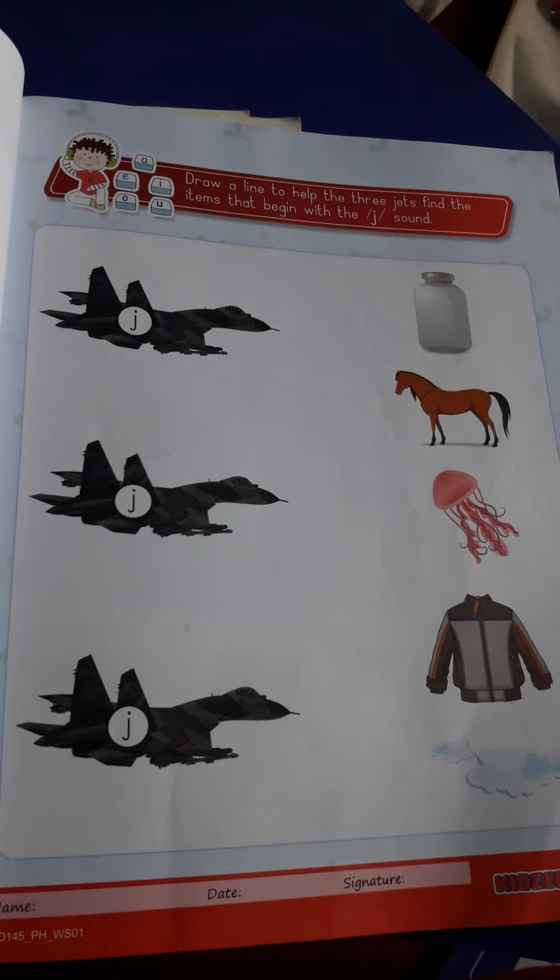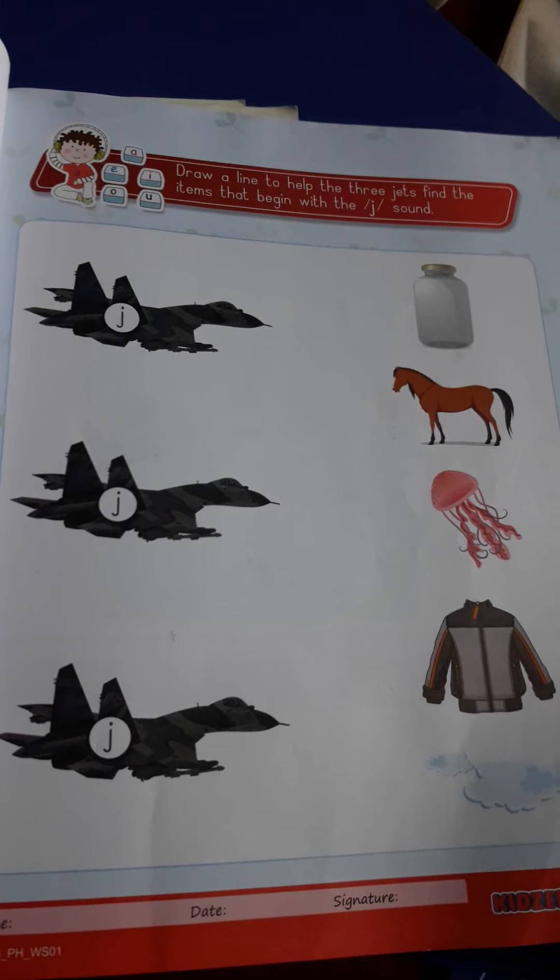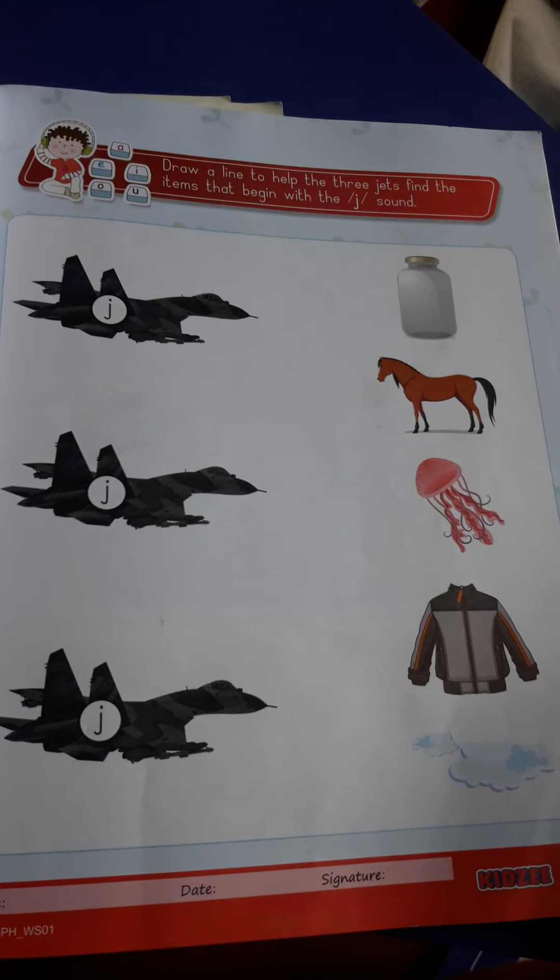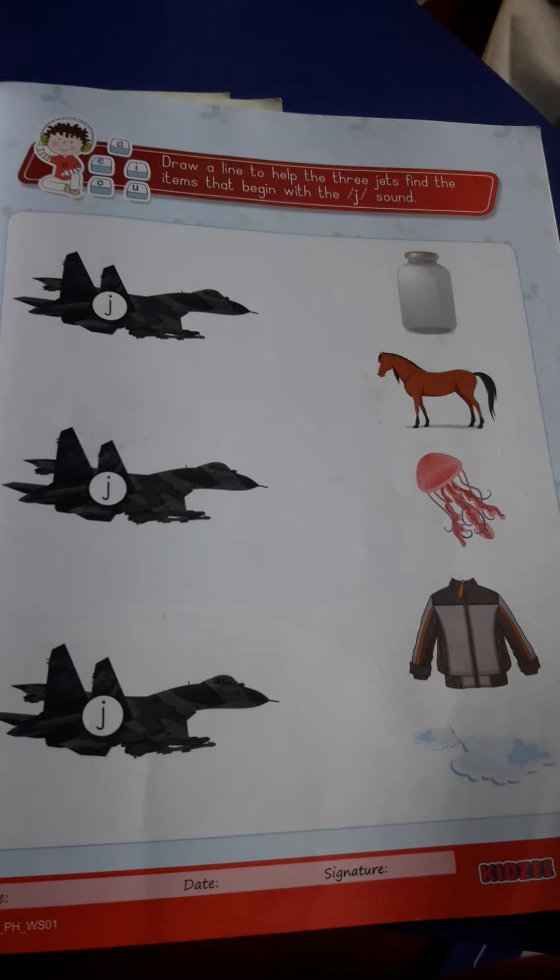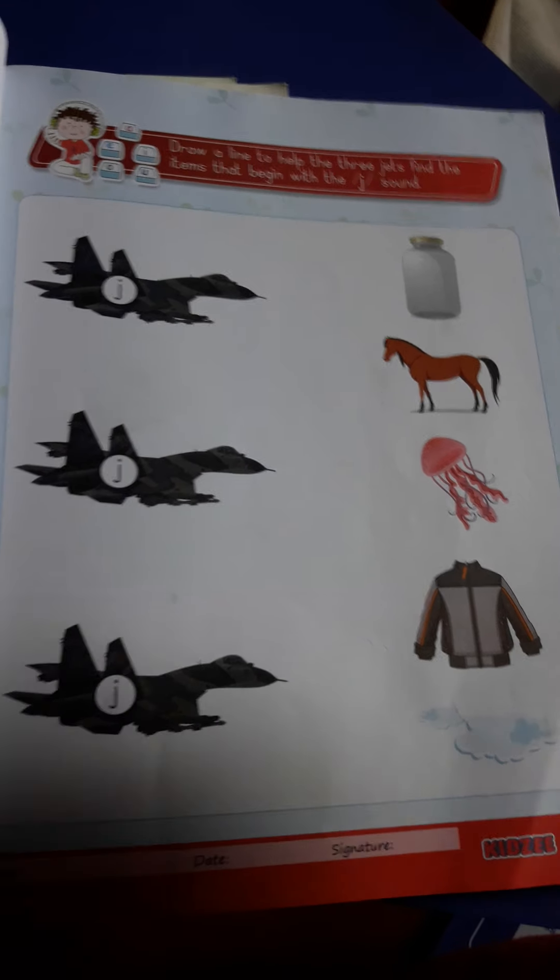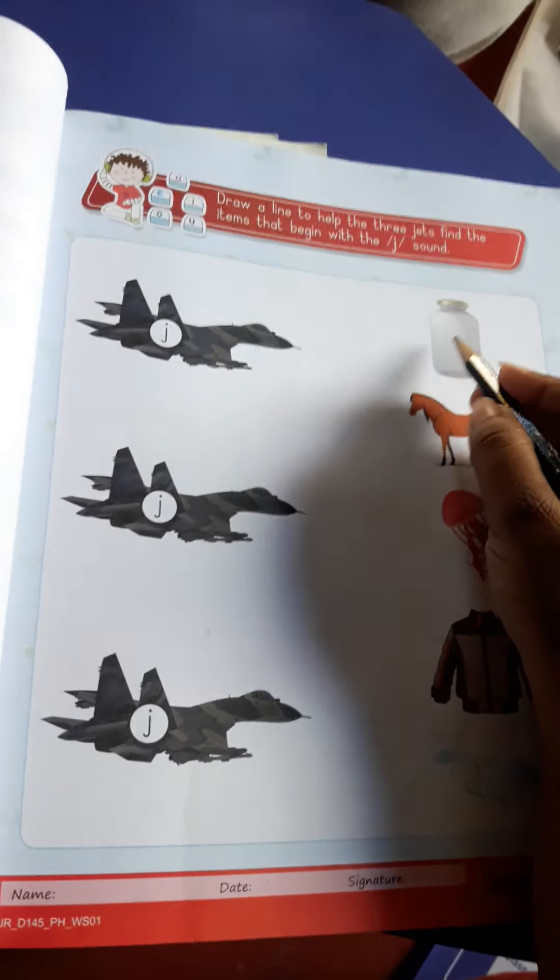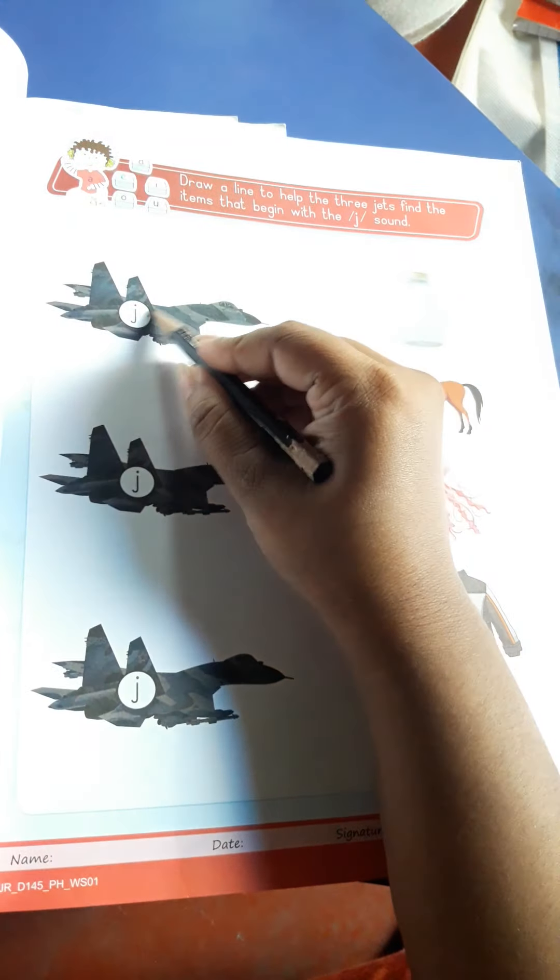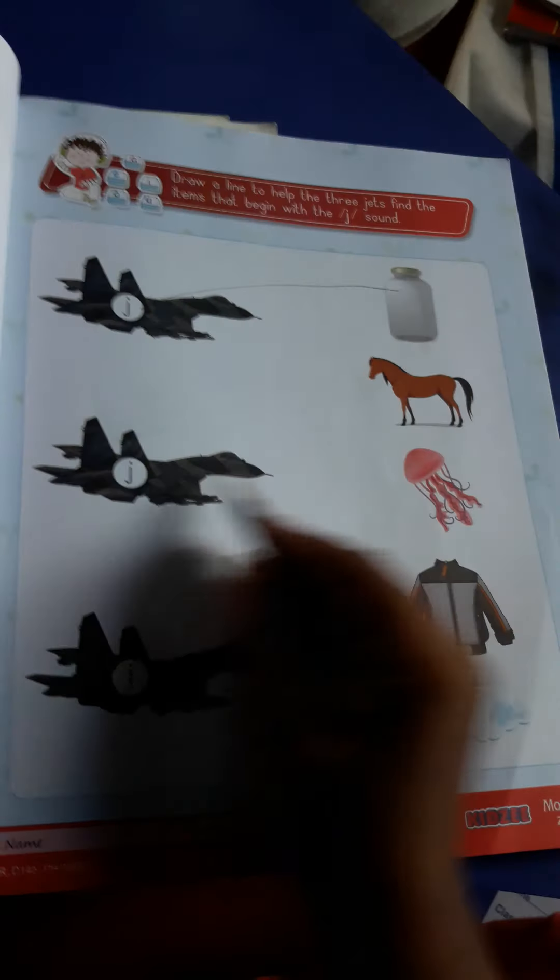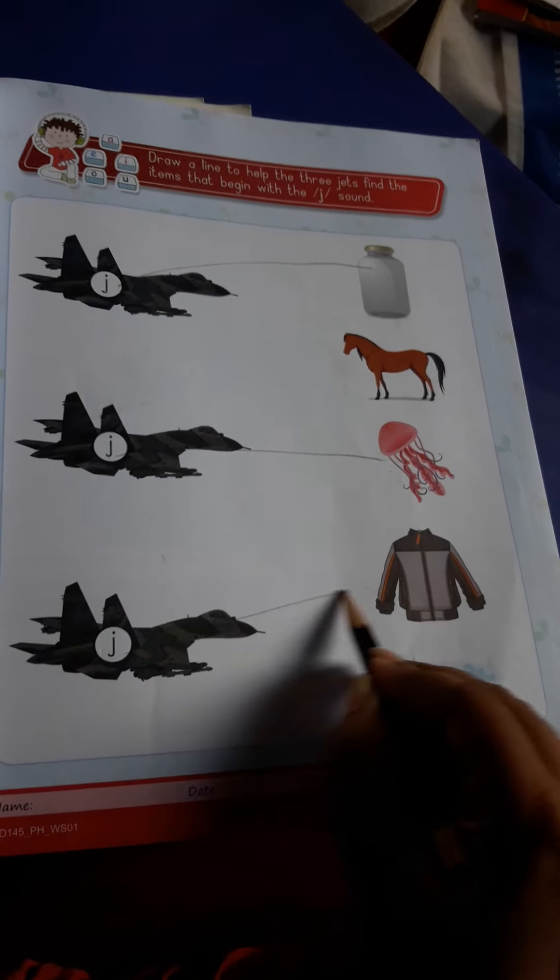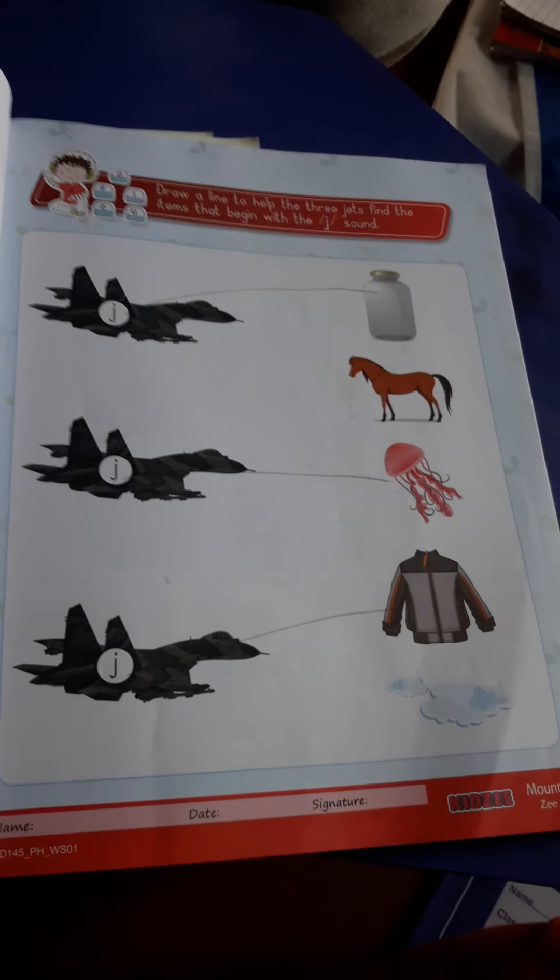Look. Draw a line to help the three Js. Find the items that begin with the J sound. J, jellyfish. J, jacket. In this way you have to match.